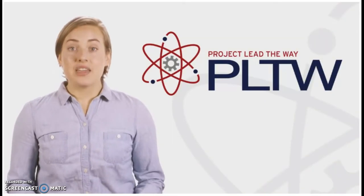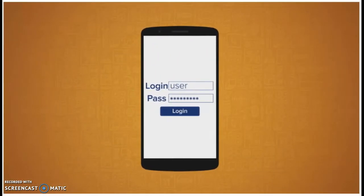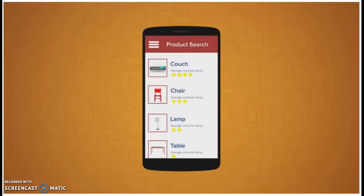For example, think about all the features of a mobile app. Each one of those features requires careful thought using clearly defined steps to create it. Even simple apps can have hundreds of steps to make them function correctly.